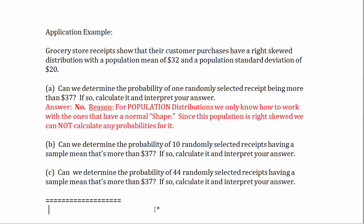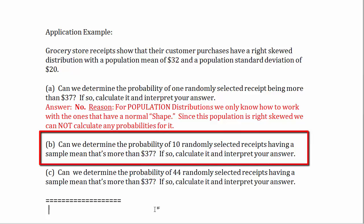Now let's try the next question: can we determine the probability of 10 randomly selected receipts having a sample mean that's more than $37? If so, calculate it and interpret your answer. Now we're working with the sampling distribution for the sample mean, because more than one — specifically 10 — are being randomly selected.